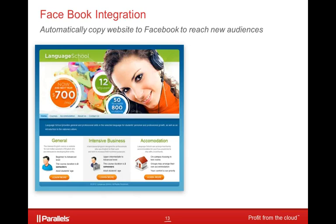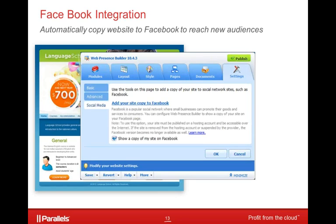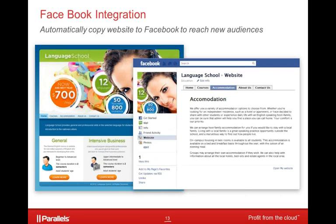One of the other very popular features is our Facebook integration. The idea is to make it very easy to construct a website in Web Presence Builder for your internet site and then have that same design published to your Facebook page so that both sites show the same information. This way you don't have to manage two separate websites — you build it in Web Presence Builder, pull up the module, go to settings, and click 'add your site copy to Facebook.' The content has to be restructured to fit the Facebook format, but it's as simple as creating the site once and publishing it out to your Facebook page.